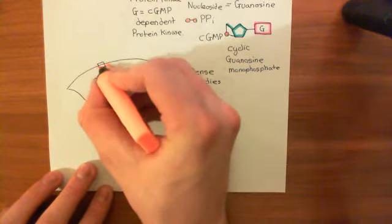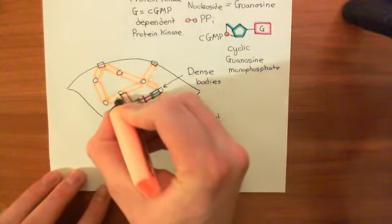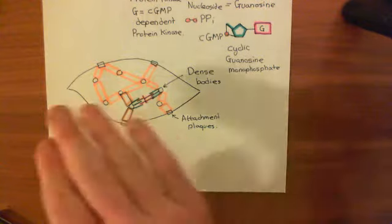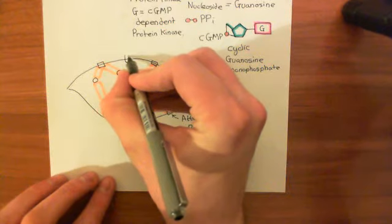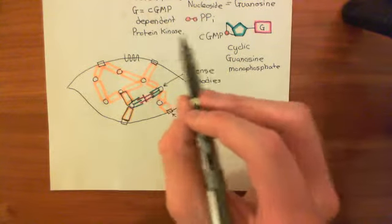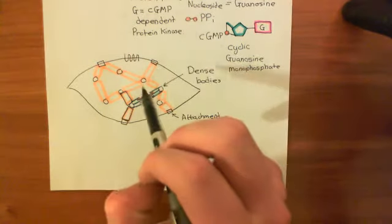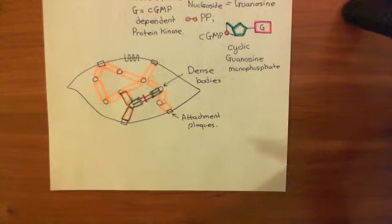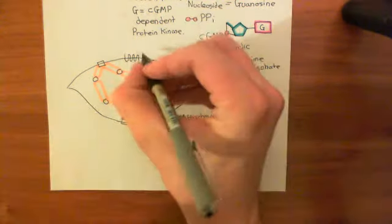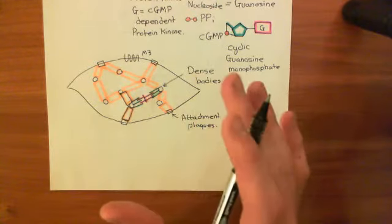If calcium goes up in the cytoplasm of the smooth muscle cell — which it will do in response to acetylcholine stimulation — these smooth muscle cells have M3 muscarinic receptors on their surface, just like the endothelial cells do. When we give an intravenous dose of acetylcholine, it reaches the endothelial cells but not the smooth muscle cells. The smooth muscle cells only see the nitric oxide produced by the endothelial cells. But if M3 receptors on the smooth muscle are stimulated, it causes calcium wave-like signaling.